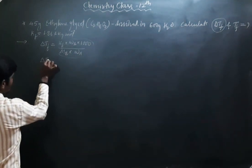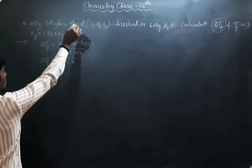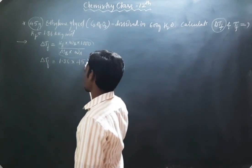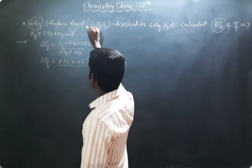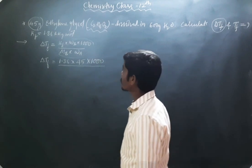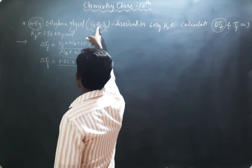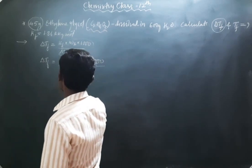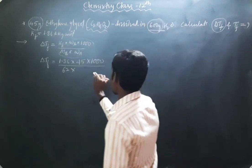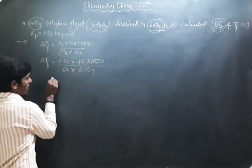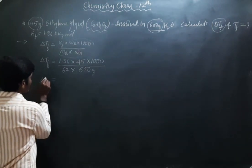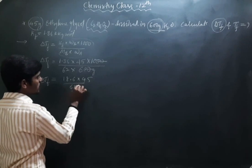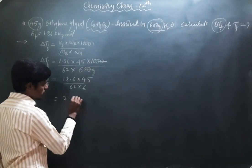Substituting into the formula: ΔTf = 1.86 × 45 × 1000 divided by 62 × 600. Cancelling two zeros, this becomes 18.6 × 45 divided by 62 × 6. The final answer for ΔTf is 2.25 K. The depression in freezing point has been calculated.